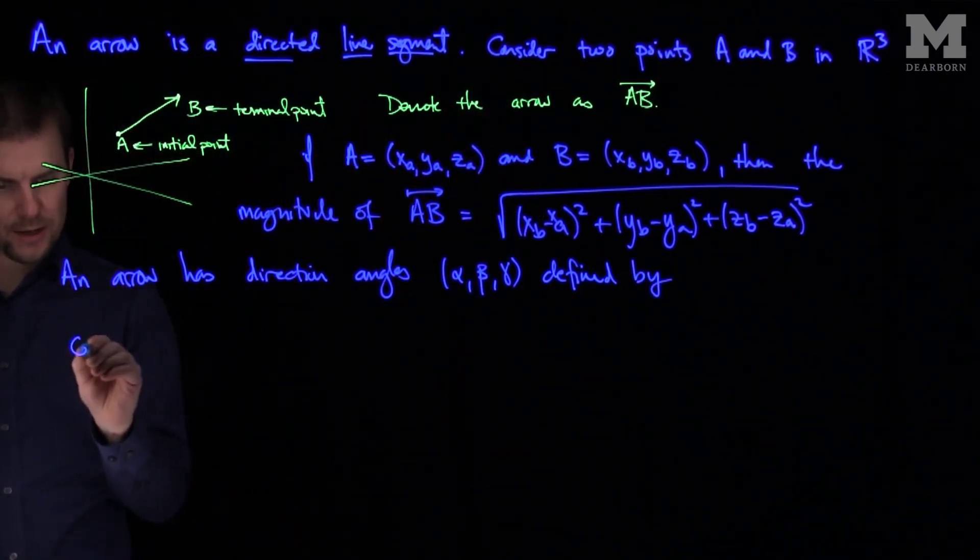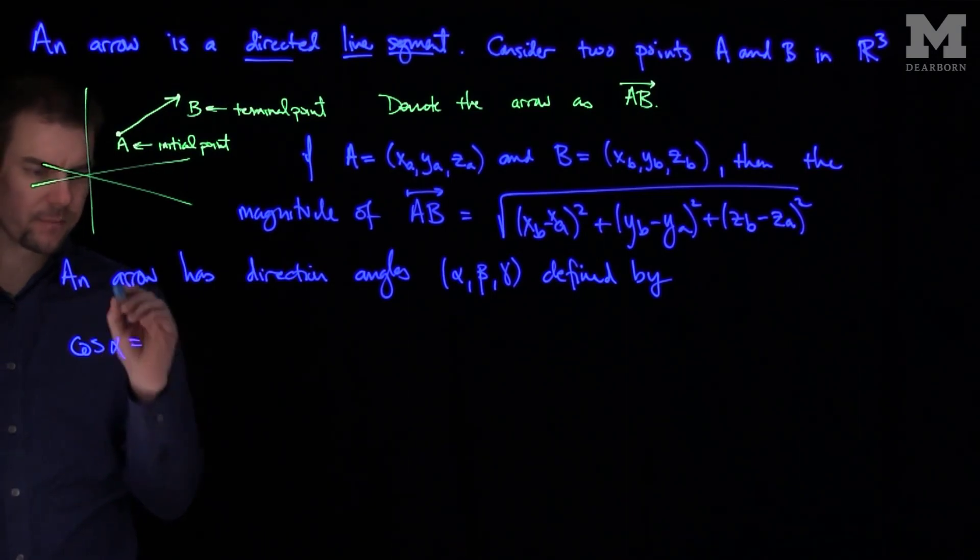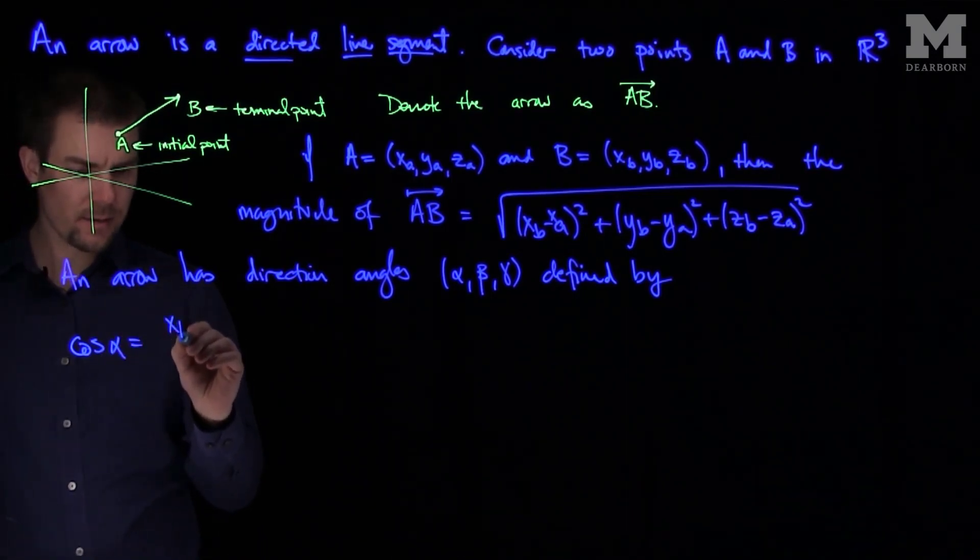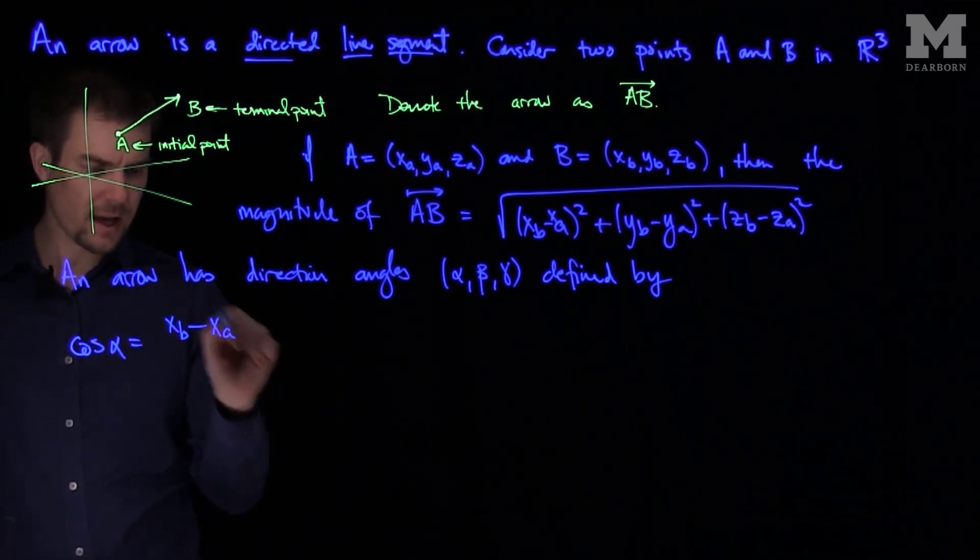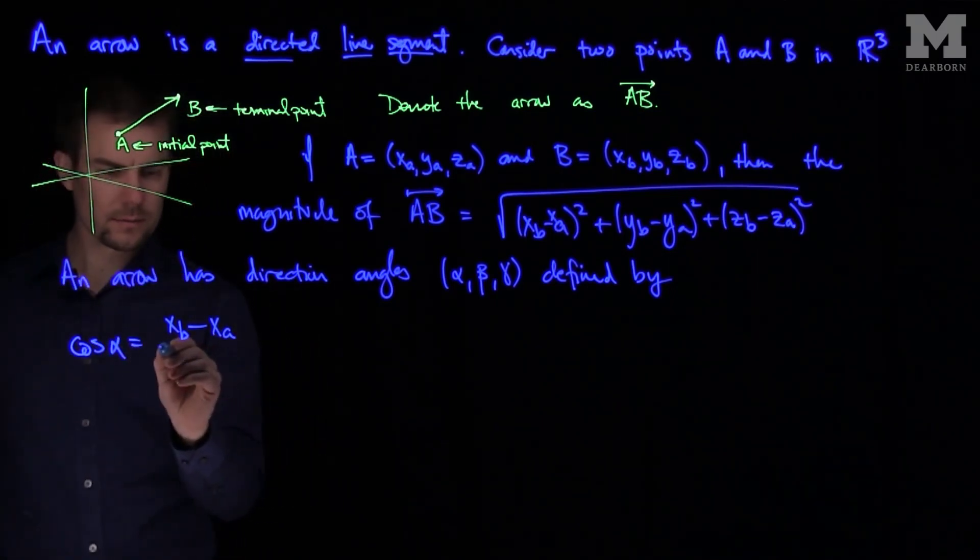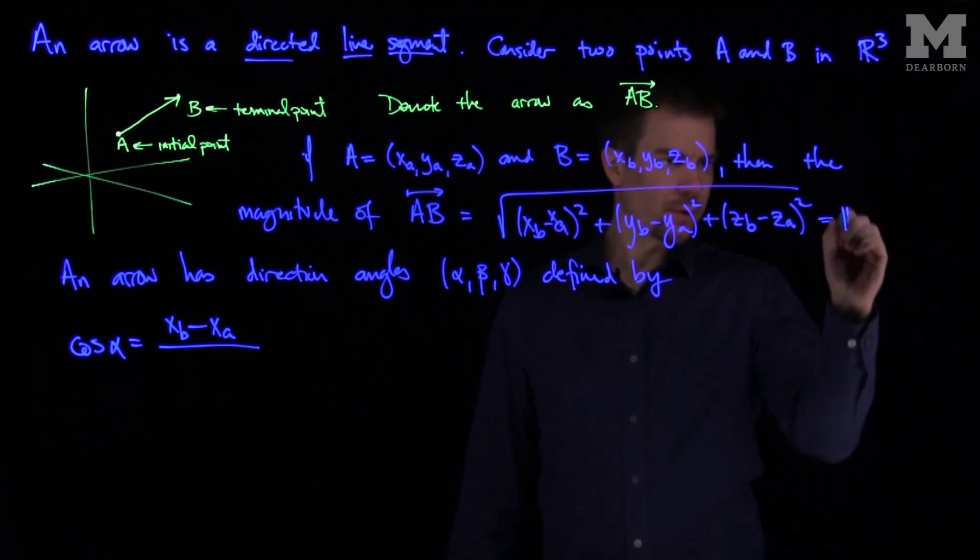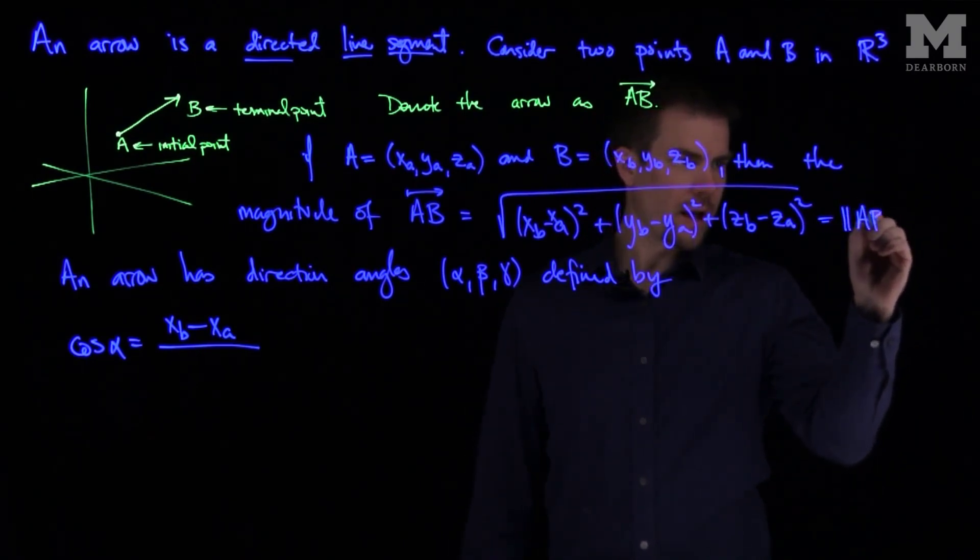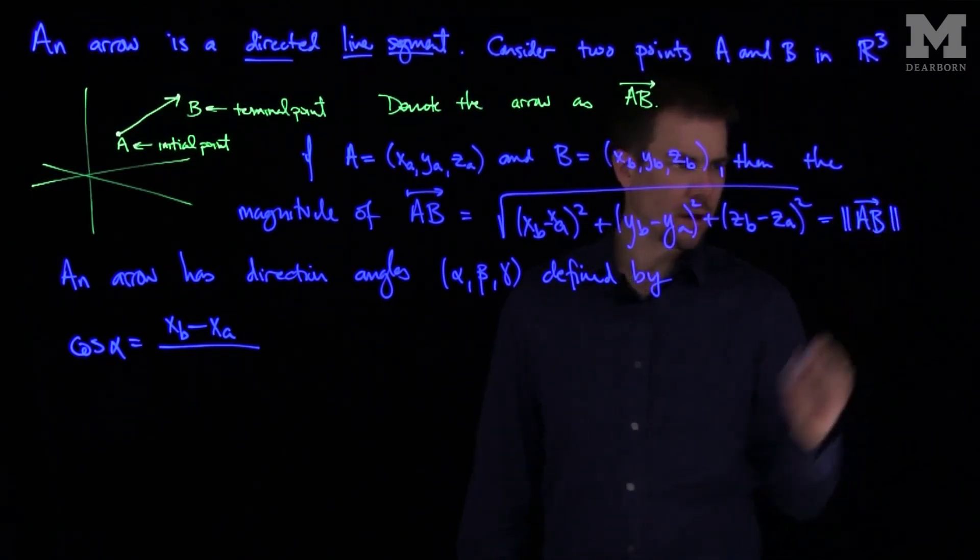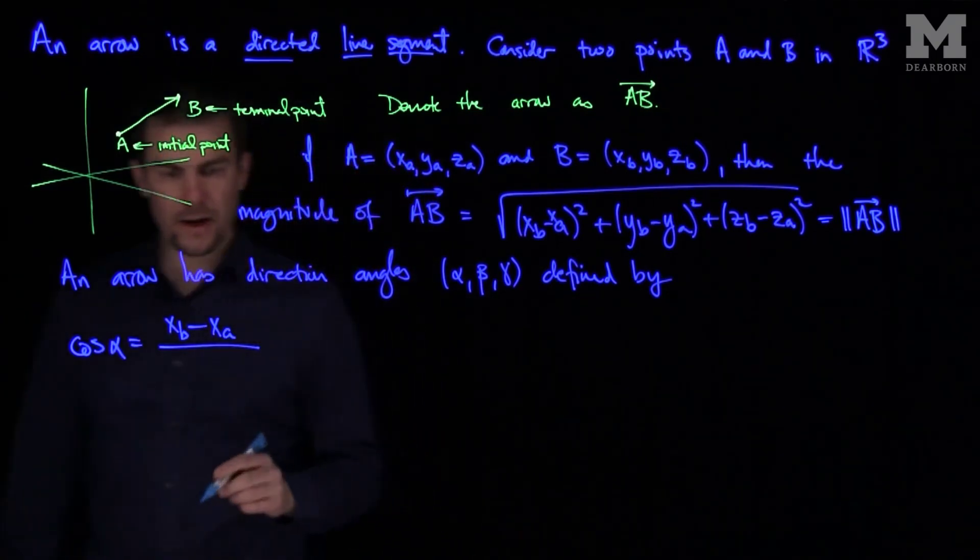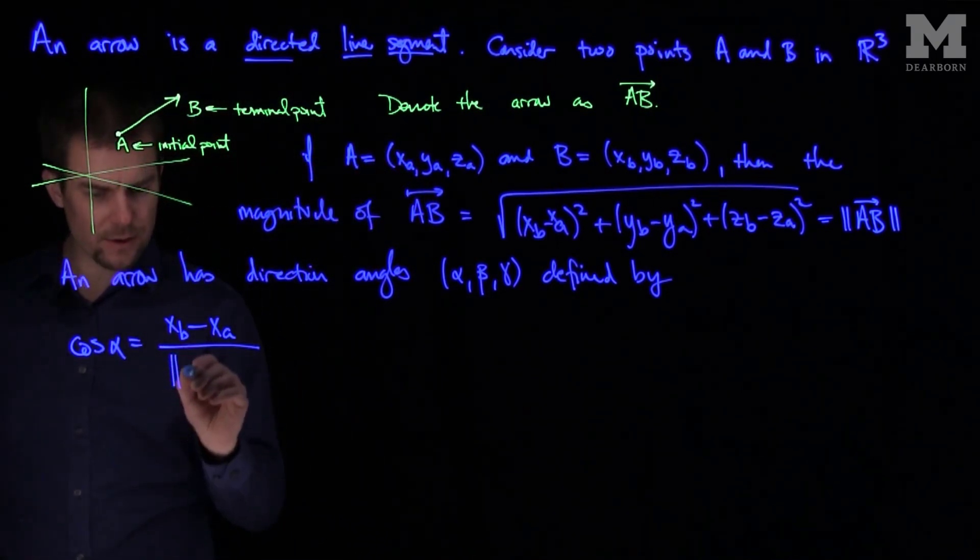that the cosine of alpha is (XB minus XA) over, we'll call this magnitude of AB. Let's make up some notation for this. We'll call this double arrow AB for the magnitude of the arrow. We'll divide the difference of XB and XA by the magnitude of the arrow.